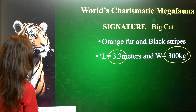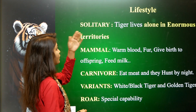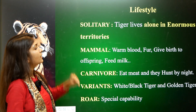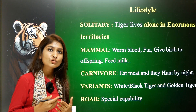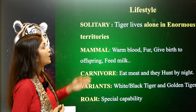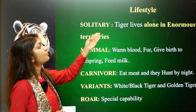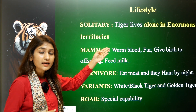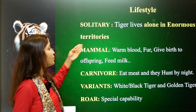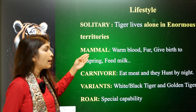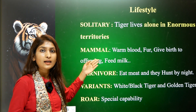Moving on to understand the lifestyle of the tiger: it is a solitary animal that likes to stay alone. It lives alone as the apex predator in an enormous territory. It is a mammal species — and mammal is a class. What is a mammal? Animals belonging to the mammal class have certain characteristics.